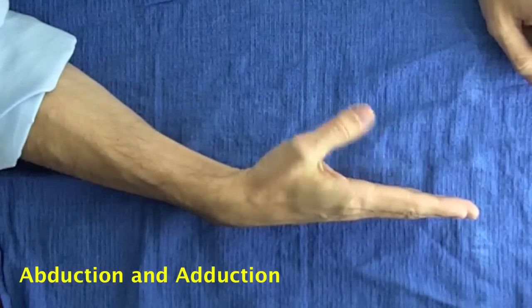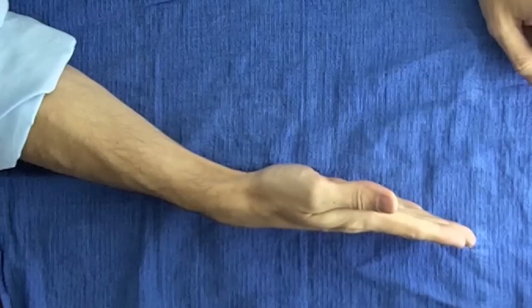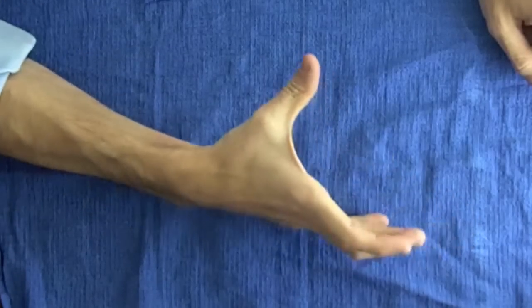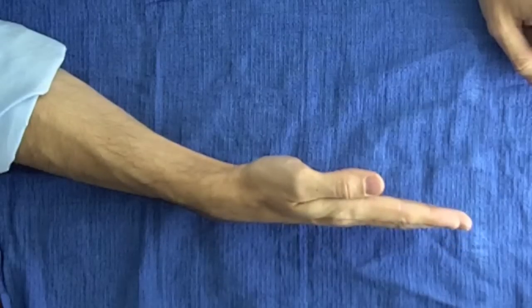Abduction and adduction are used to describe the thumb's motion out of and into the palm respectively. Abduction helps you get your hand around large objects like a jar of peanut butter or a two-liter bottle.